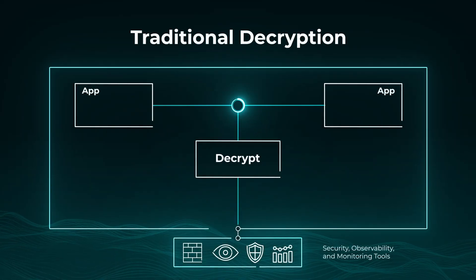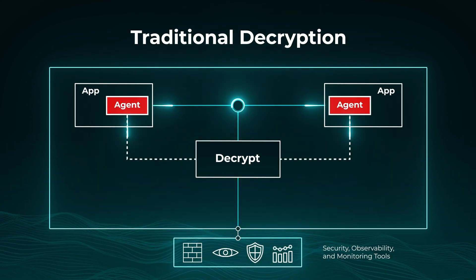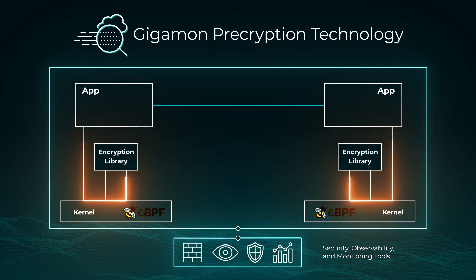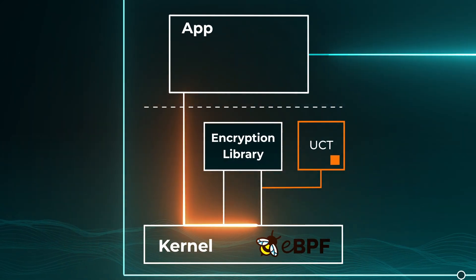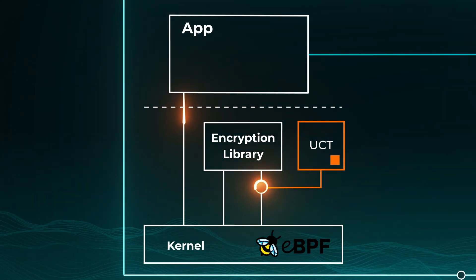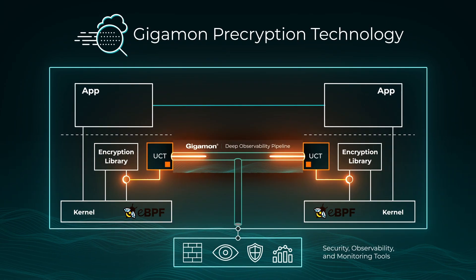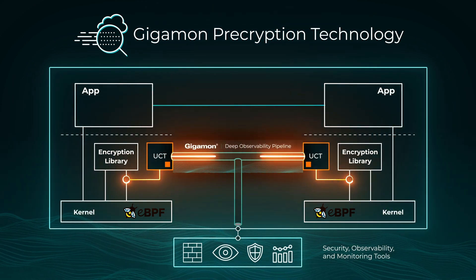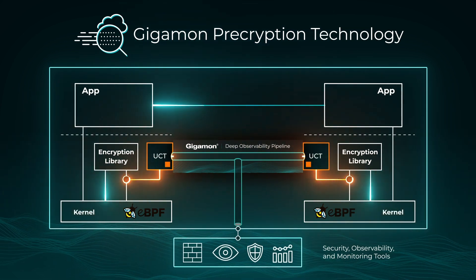Traditional decryption grabs traffic on the wire and requires complex key management, or it requires intrusive agents inside the application workspace. Gigamon Precryption Technology works differently. It uses Gigamon Universal CloudTap to configure kernel-level services at the encryption library to make a copy of the message before it gets encrypted. The clear text traffic is then encapsulated in a secure tunnel, sent to the Gigamon Deep Observability Pipeline for optimization, and forwarded on to tools for inspection and analytics.